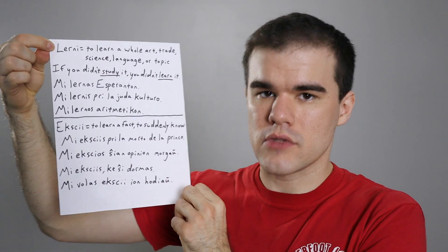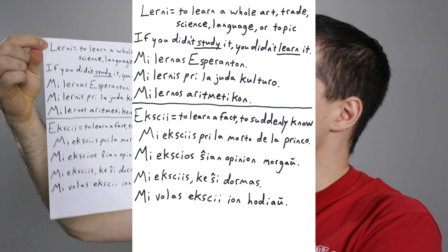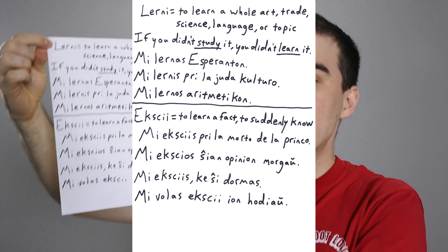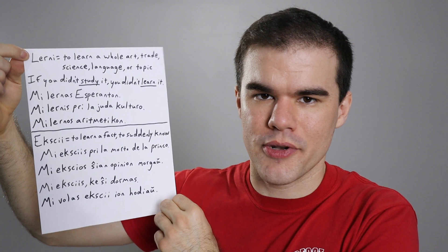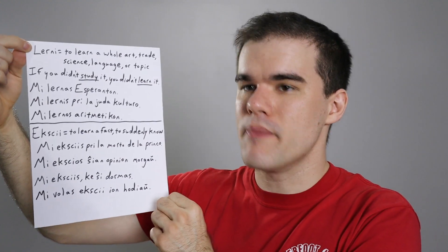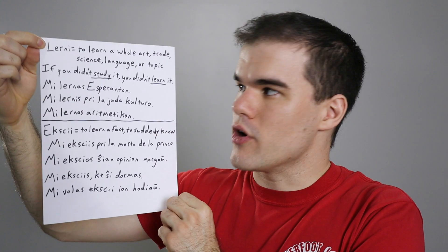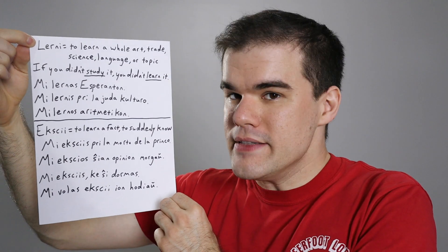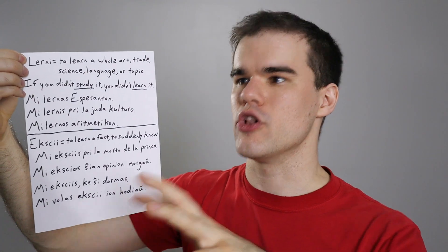Ekscii — what is that? I don't know if I'm fond of that word; it looks kind of ugly and hard to pronounce properly. Can I just avoid it? Well, no. Sorry. Ekscii is hard to say, but it's here to stay. Lerni is to learn a whole art, a trade, a science, a language, a topic in general. I might learn to become a carpenter, or learn a language, or learn mathematics — that is what lerni is used for. If you didn't study it, you probably didn't lerni it. A deep, repetitive, thorough investigation is what happens when you're learning something.